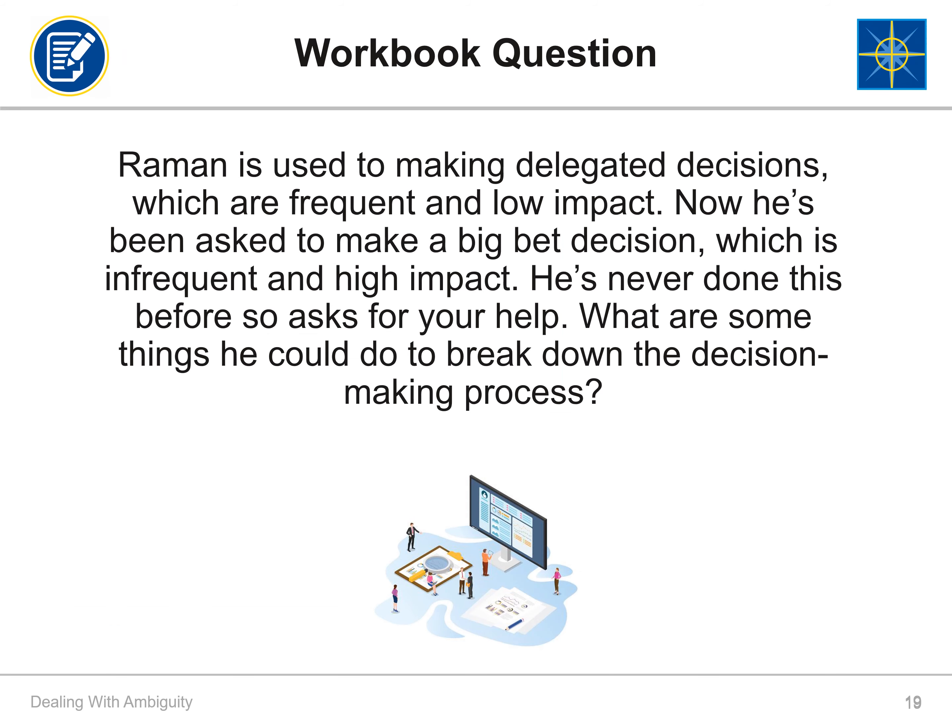Now let's use the information in an example. Raman is used to making delegated decisions, which are frequent and low impact. Now he's been asked to make a big bet decision, which is infrequent and high impact. He's never done this before, so he asks for your help. What are some things he could do to break down the decision-making process? For example, he could form a subcommittee. Please pause the video and think about some things Raman could do. Record your thoughts on page 7 of the workbook.